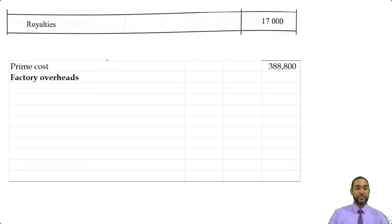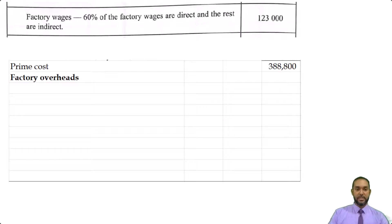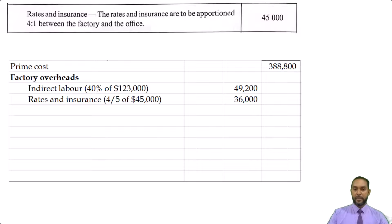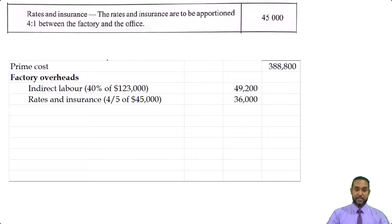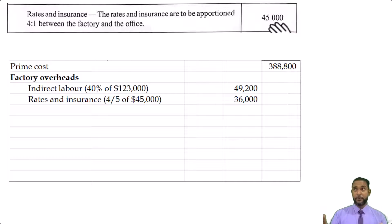Next, we have to add the factory overheads or indirect costs. We start with the indirect labor — if 60% was direct, the remainder of 40% was indirect. Next, I'm seeing rates and insurance. They told us rates and insurance are to be apportioned four to one between the factory and the office. With a ratio of four to one, we add four and one to get five, then put each number over five as a fraction. So we split the $45,000 into four-fifths to the factory and one-fifth to the office. One-fifth of $45,000 is $9,000, times four is $36,000 to the factory.